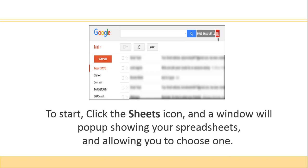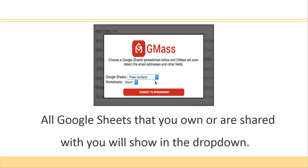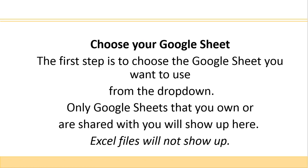To start, click on the Sheets icon and a window will pop up showing your sheets and allowing you to choose one of them. All the Google Sheets that you own or are shared with you will show in the dropdown. Only Google Sheets that you own or are shared with you will show up here, and Excel files will not show up.